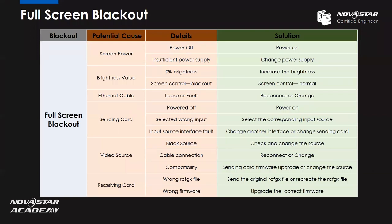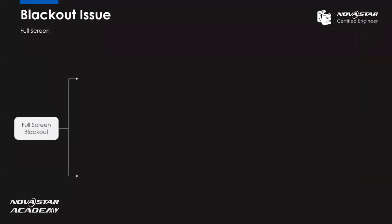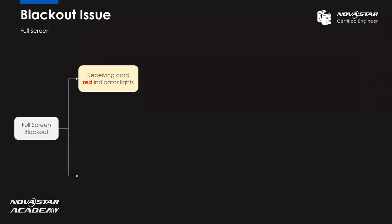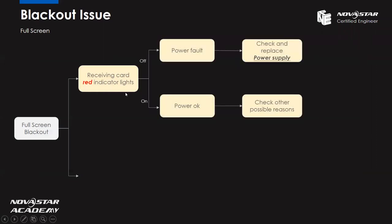After getting all these points, let's look at the systematic method. When a full screen blackout issue happens, we can make a preliminary judgment from the receiving card indicator lights. First, check the receiving card red indicator light. If it is off, it means there is something wrong with the power — check and possibly replace the power supply. If the red indicator light is on, the power is OK, and we need to check other possible reasons.